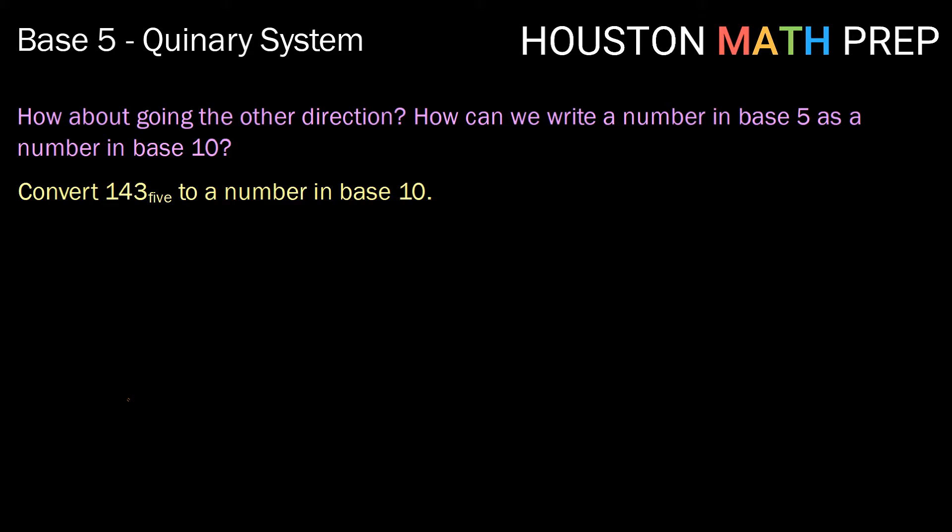All right, how about, of course, we want to know can we go the other direction? Can we write a number in base 5 as a number in base 10? Well, certainly we can. We just need to think about what each place value stands for. So remember, our furthest right place value is groups of 1. Our next place value over is groups of 5 squared, or 25. So the number 143 base 5 means we have 1 group of 25 plus 4 groups of 5 plus 3 groups of 1. That would be 25 plus 20 plus 3, or 48 in base 10. So the number 143 base 5 is 48 in base 10.